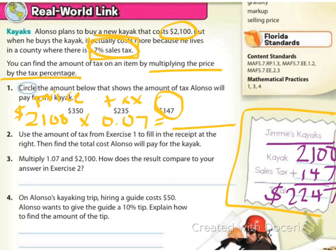Number three says multiply 1.07 times 2,100, how does that result compare to your answer in exercise two? So please go ahead and do that. You're going to do the 2,100 times 1.07. Pause the video now so that you can do that. And what you notice is it should come out to be $2,247. Look at that for a minute and tell me why do you think that 1.07 came out to the same as when we did the .07 times 2,100 and then added it back to 2,100? Think about why do you think that works. We're going to go over why in just a moment.